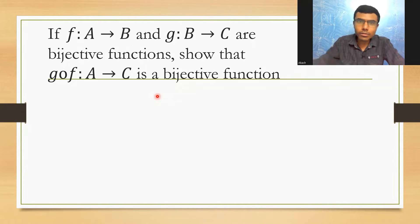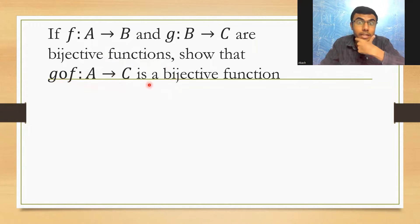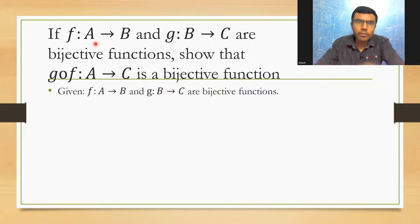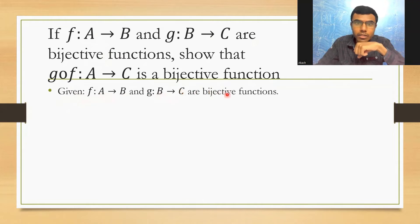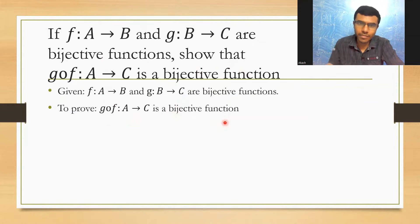Now let's see how to show that if two functions f:A→B and g:B→C are bijective functions, then we have to prove that g∘f:A→C is also a bijective function. I'll be explaining this theorem in a step-by-step manner. We are given that f:A→B and g:B→C are bijective functions, and we need to show that g∘f:A→C is also a bijective function.